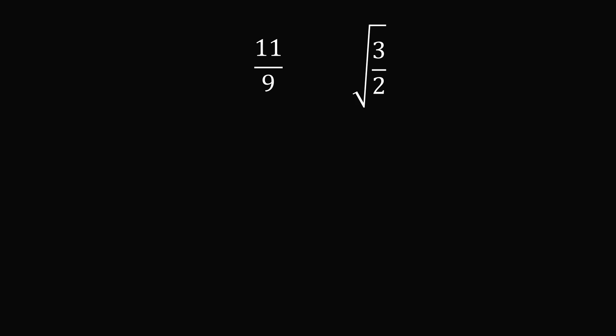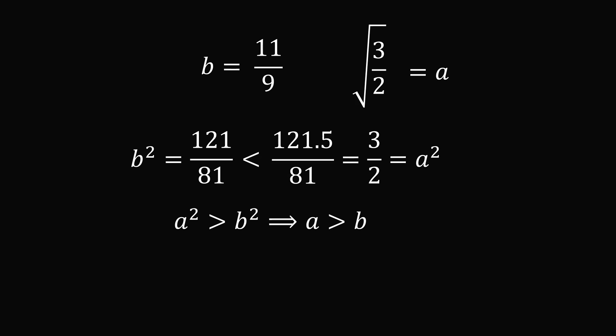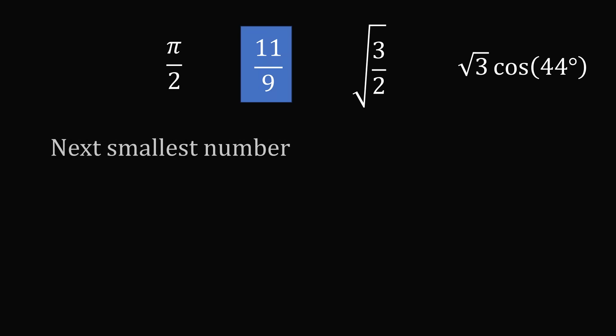It only remains to compare 11 over 9 to the square root of 3 over 2. Again, let's compare squares. Let a equal the square root of 3 over 2 and b equal 11 over 9. A squared is 3 over 2, and b squared is 121 over 81. Converting a squared to a fraction over 81 gives 121.5 over 81. Since 121.5 is greater than 121, a squared is greater than b squared, which implies a is greater than b. Therefore the square root of 3 over 2 is not smaller than 11 over 9, and 11 over 9 is the next smallest number.